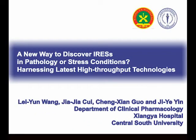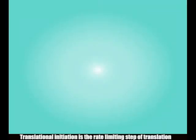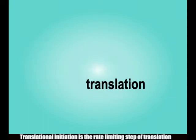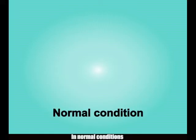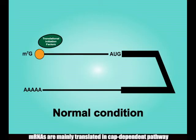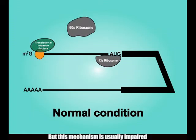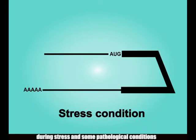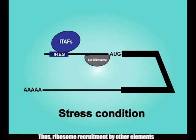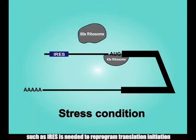A new way to discover internal ribosomal entry sites in pathology or stress conditions, harnessing latest high-throughput technologies. Translational initiation is the rate-limiting step of translation and thus is important for translational reprogramming in normal conditions. mRNAs are mainly translated in a CAP-dependent pathway, but this mechanism is usually impaired during stress and some pathological conditions. Thus, ribosome recruitment by other elements, such as IRESs, is needed to reprogram translation initiation.